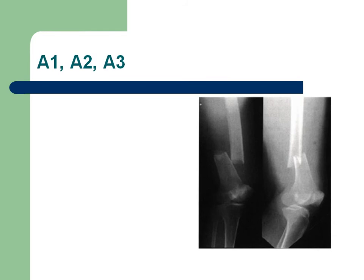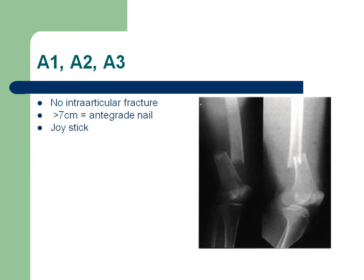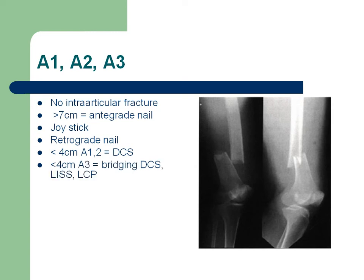For Type A fractures: if we have more than 7 centimeters of distal fragment, we can use an antegrade nail — without opening the fracture site, using biological fixation with a joystick and a Steinmann pin in the distal part percutaneously to reduce it. For fragments less than 4 centimeters, a retrograde nail — A1 or A2 — or DCS can be used. For A3 with less than 4 centimeters, bridging DCS, LISS, or LCP plate is appropriate. In osteopenic bone, shortening and impaction of the fragments may be necessary.